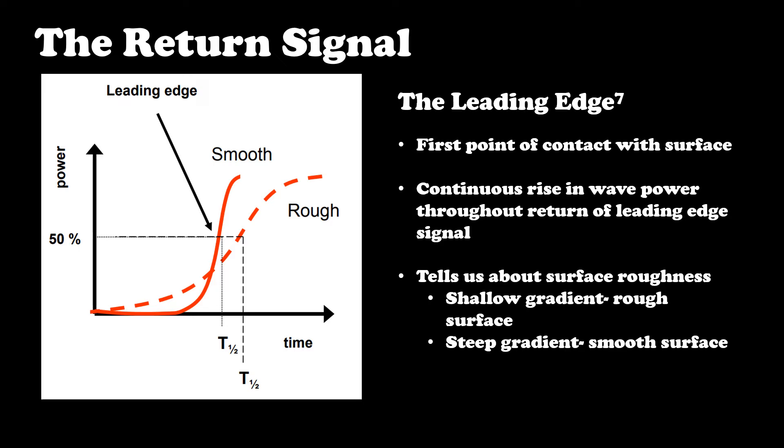The slope of the leading edge can tell us a lot about the roughness of the surface below. As you can see on this plot, a steeper gradient is indicative of a smoother surface and a shallower gradient corresponds to a rougher surface, as the rise in returning wave power is more gradual than over a homogeneous surface.